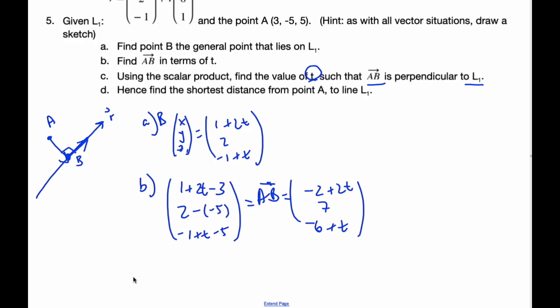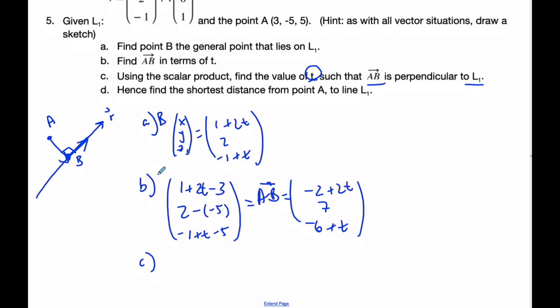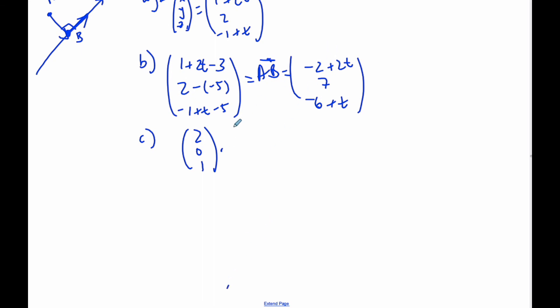If I take AB and dot product with the direction vector of the line, so I go (2, 0, 1) dot product with AB which is (-2+2t, 7, -6+t). If I dot product and make it equal to 0, that will ensure they're perpendicular.